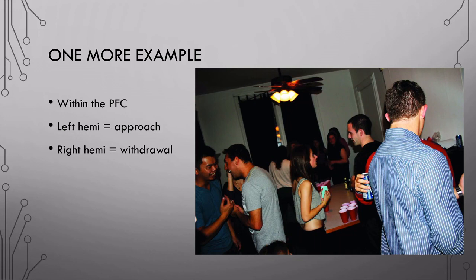I'll go over one last example about hemispheric specialization. So imagine you're at a party and you quickly realize that one friend you know is not there. So you don't know a single person at this party. And this can cause some tension. Do you leave? Do you stay and get a drink, try to meet some people? This is a constant tug-and-pull relationship between approach and avoidance or withdrawal behaviors.